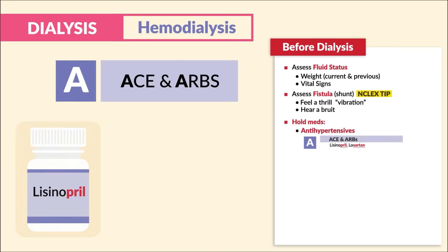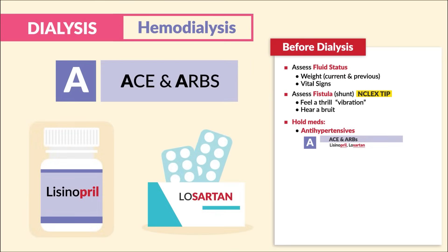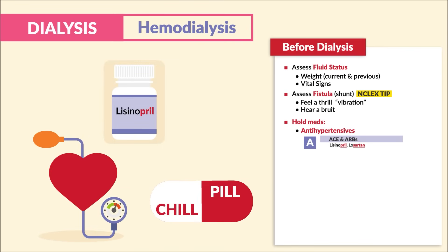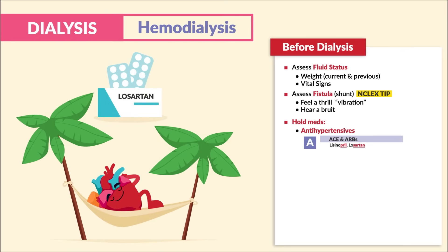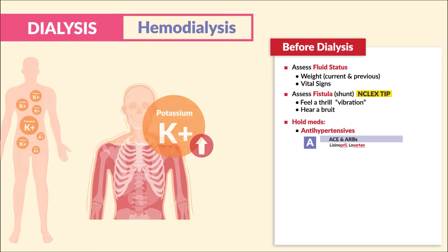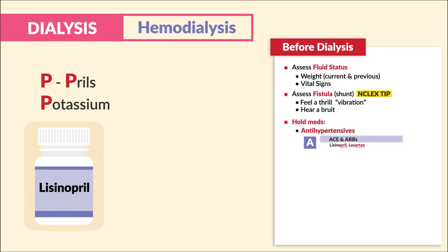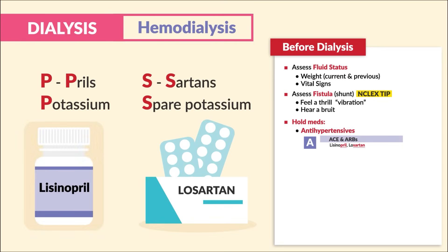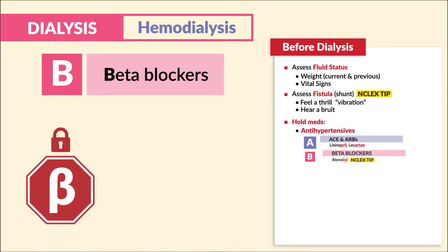A is for ACEs and ARBs, ending in pril and sartan, like lisinopril and losartan. Prils are like a chill pill for the heart — low blood pressure. Sartans kind of sound like 'relax man' — decreased blood pressure. A little side note: both retain potassium in the body, causing hyperkalemia. For P in prils, just think P for potassium. And the S in sartan — they spare potassium. B is for beta blockers, ending in LOL, like atenolol.